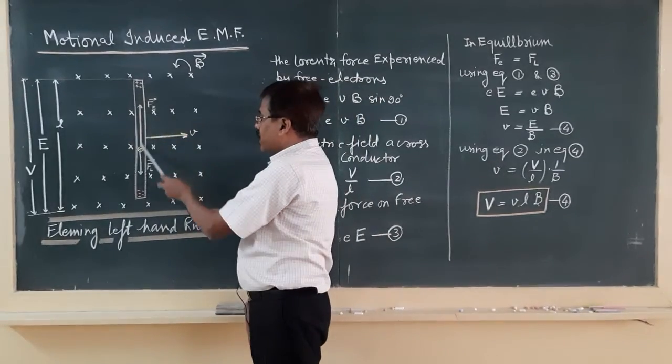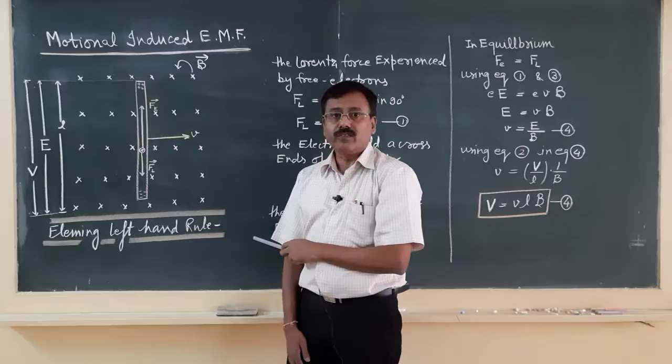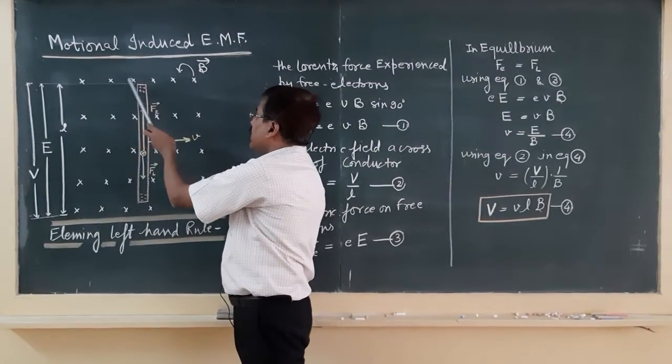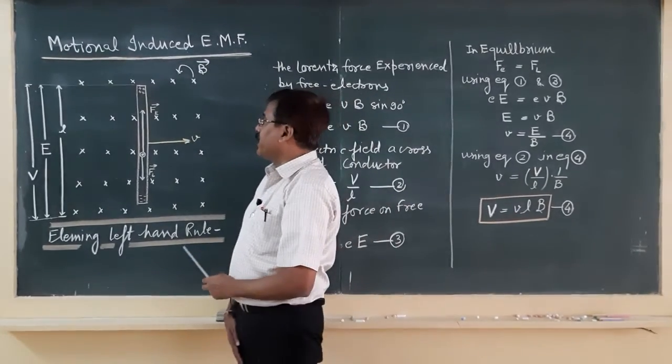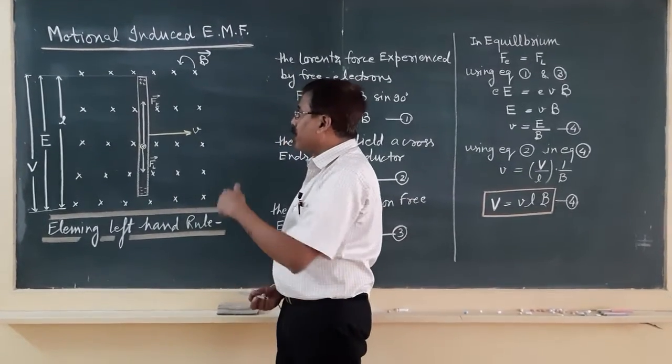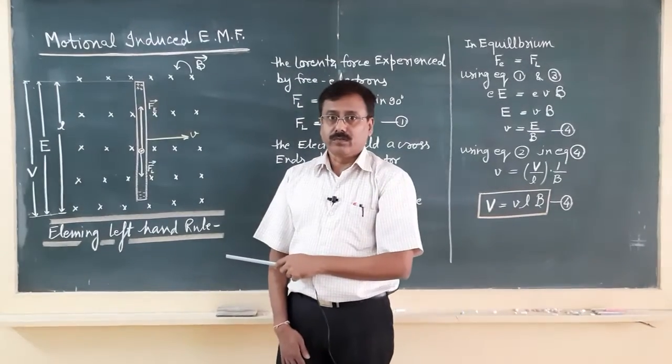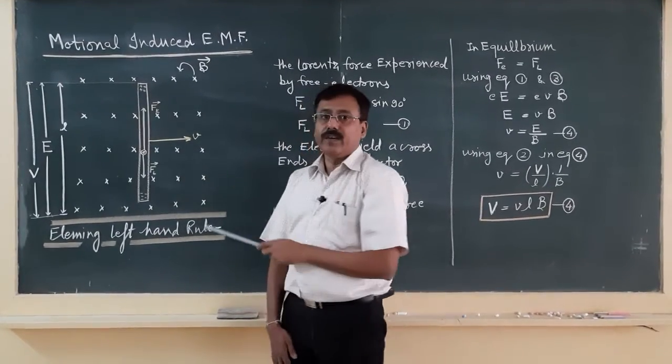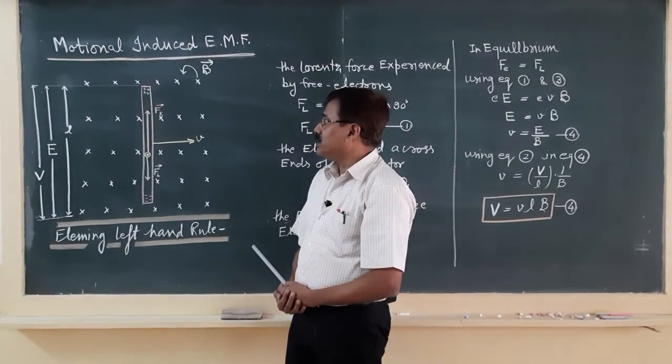So, this is a straight conductor. This straight conductor is moving in a magnetic field with velocity v, and the magnetic field is represented by the cross array. This cross array indicates that the magnetic field is perpendicular inward with respect to the board. It means the angle between velocity and magnetic field is 90 degrees; both are perpendicular to each other.